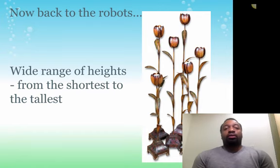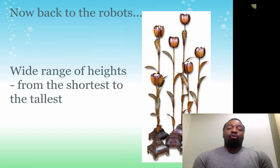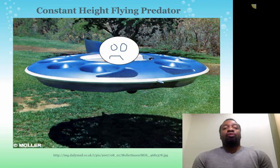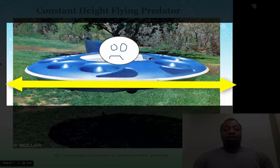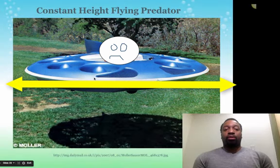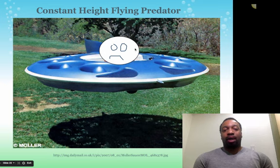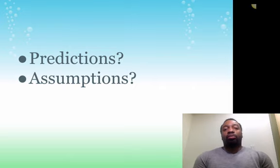Let's go back to our robots to talk about other kinds of selection. Imagine these robots have a wide range of heights — some short, some tall, some intermediate. Now imagine there's a predatory robot, a flying hovercraft that flies at a constant height — it can't go above or below that height. What it does is hypnotize robots that are at the same height as it, and once hypnotized, it can destroy them.